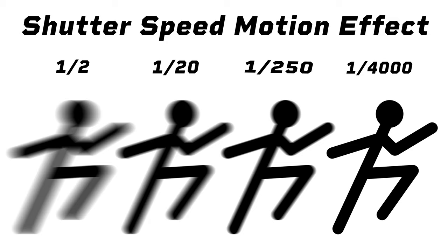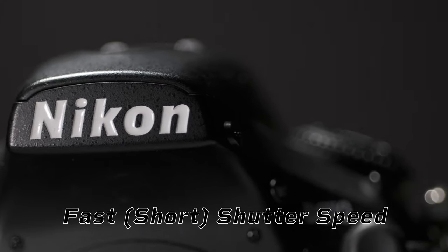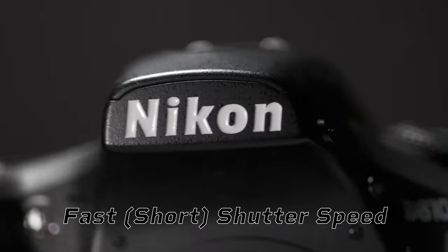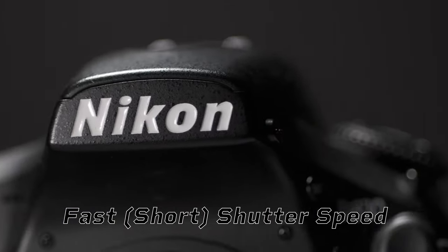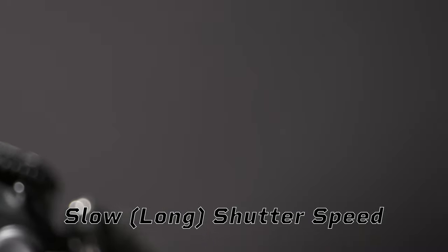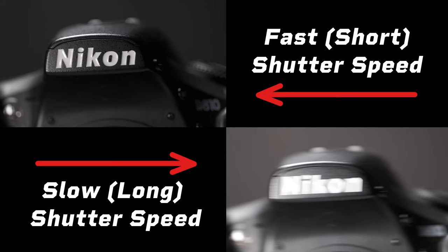So how does shutter speed affect your image? Shutter speed gives you control over time. A fast shutter speed allows you to freeze objects or people in motion for a crisp, sharp image. A slow shutter speed will allow you to shoot a long exposure to capture the stars moving across the sky, or pan with an object to create a sense of motion. This is a great tool you can use to add more creativity and motion to your photos.